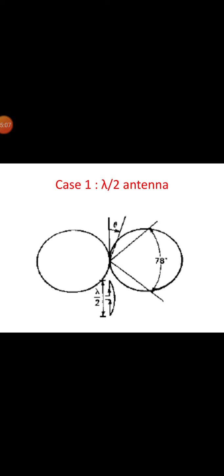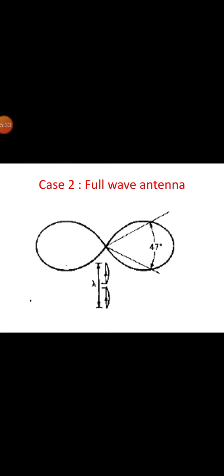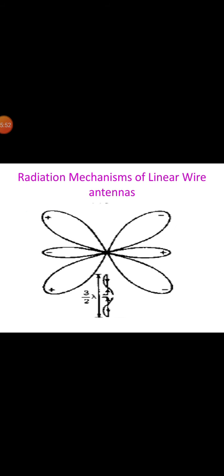This is the radiation pattern for length l = lambda/2. Now let us consider the second case where l = lambda. Then the pattern factor becomes C = cos(3π/2 * cosθ) / sinθ. The pattern for this case is represented in the figure. With the midpoint as the phase center, the phase shifts 180° at each null, and the relative phase of the lobes is indicated by plus and minus signs.